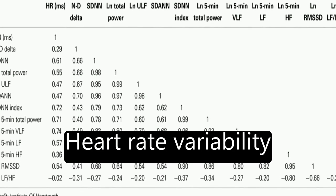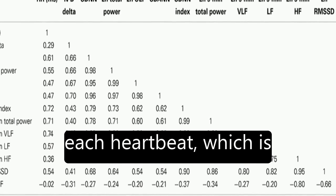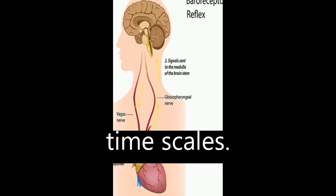Heart Rate Variability, HRV, refers to the variation in time between each heartbeat, which is influenced by multiple regulatory systems operating on different time scales.